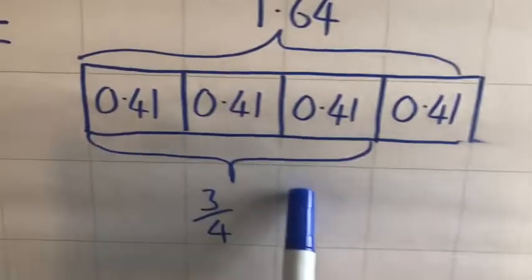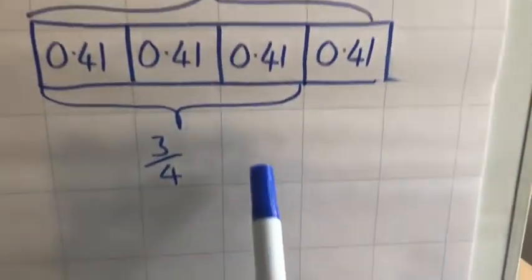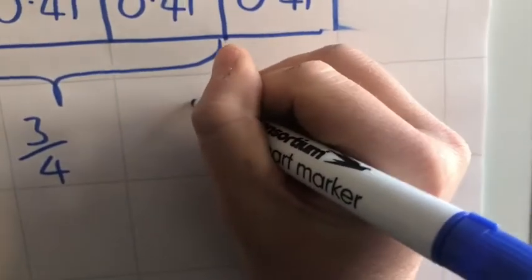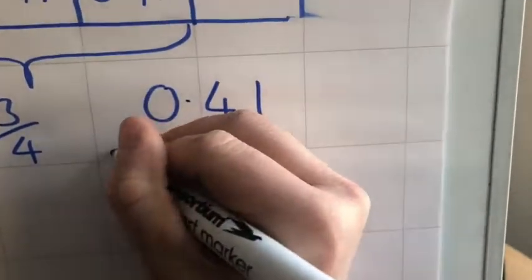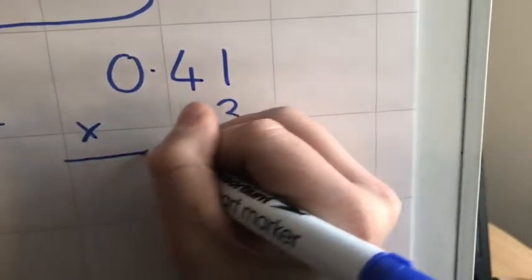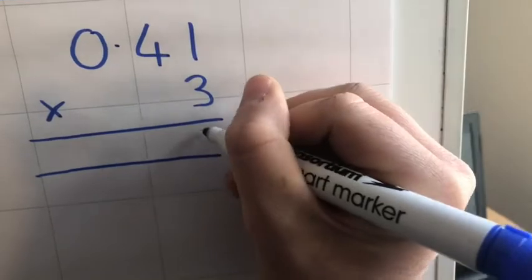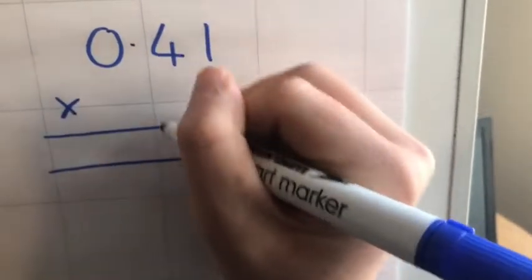Two ways I can do it. I can either do three lots of 0.41, like so. Three times one is three, three times four is 12. Put that decimal point down. Three times zero is zero, add the one. There we go, 1.23.